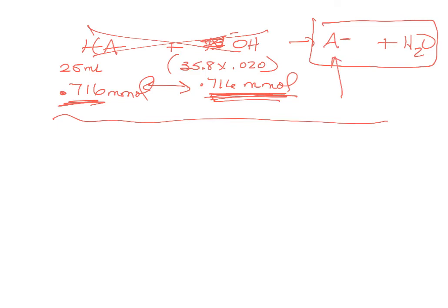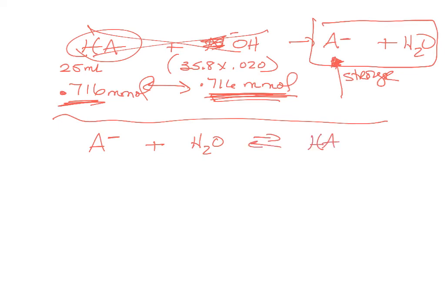The conjugate base is going to be in equilibrium with water, producing a little bit of excess hydroxide and making the pH basic. So now we're doing a simple ICE table for a weak base. ICE tables use concentrations, so we need the concentration of the weak base.